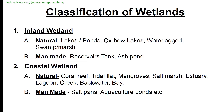Classification of wetlands: inland wetland and coastal wetland. Inland wetlands are classified into natural and man-made. Natural ones are lakes, ponds, oxbow lakes, and waterlogged swamps or marshes. Man-made are reservoirs, tanks, and ash ponds. Coastal wetlands — natural ones include coral reef, tidal flat, mangroves, salt marsh, estuary, lagoon, creek, backwater, and bay. Man-made are salt pans, aquaculture ponds, etc.